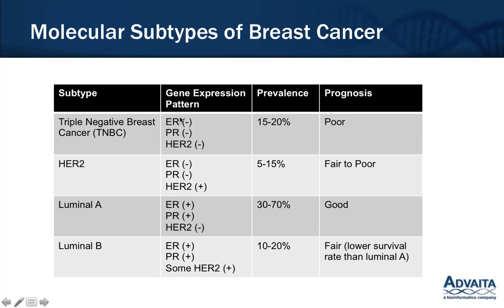There are many different ways to classify breast cancer. We are specifically looking at a classification based on the hormone receptor status because it is relevant to our dataset. We have four different subtypes stratified based on their gene expression pattern, specifically their hormone receptor pattern: triple negative breast cancer, also called basal-like breast cancer, which is hormonal independent and has the worst prognosis; HER2 positive; and the luminal subtypes divided into luminal A and luminal B.